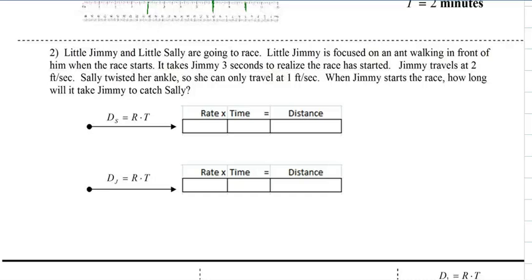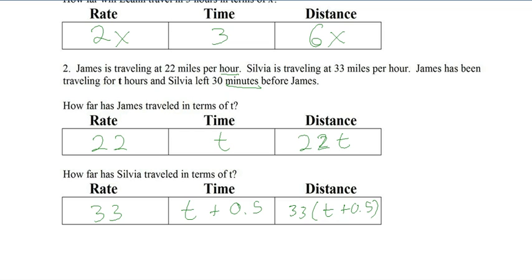So read the problem to yourself, and then see if you can figure out what goes in where. So this is Sally, and that's why I have ds there. This is Jimmy. Okay. So Sally's rate is 1 foot per second. Jimmy's is 2. And the problem is asking when Jimmy starts the race. That means we have the t for Jimmy. So that's t for Jimmy. And all you have to do is ask yourself now, for Sally, did she have more or less time? We know it's a difference of 3 seconds, but did she have 3 seconds more or less? Well, since she started before him, she had 3 seconds more. This goes back to the same warm-up problem we did with James and Sylvia, where Sylvia had 30 minutes more because she left before James.